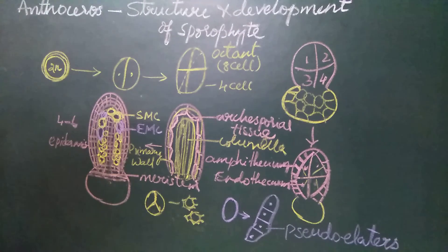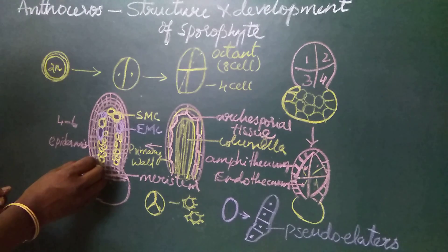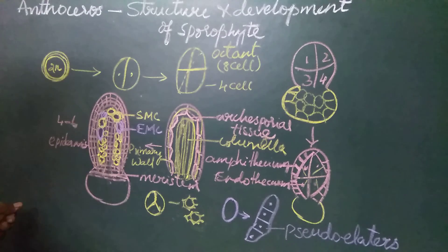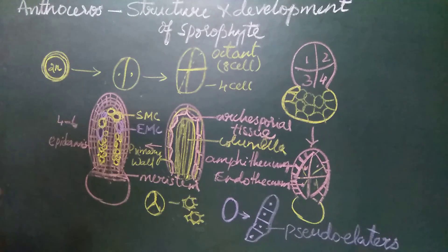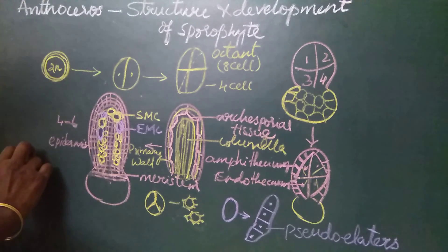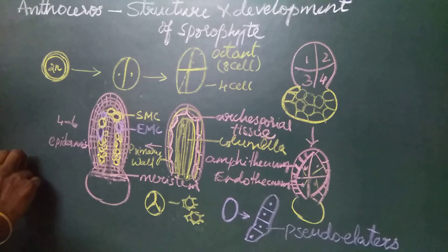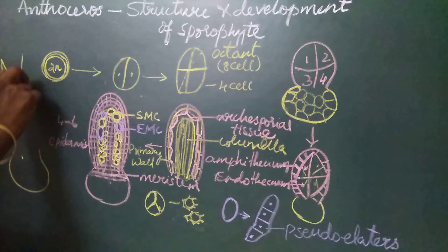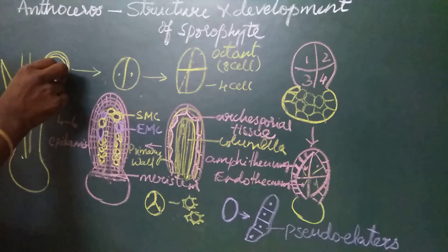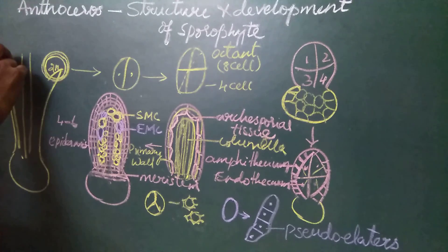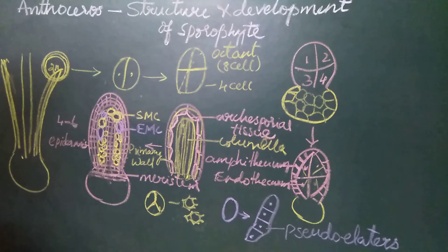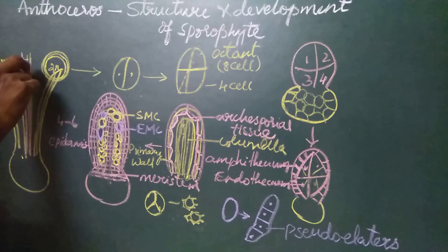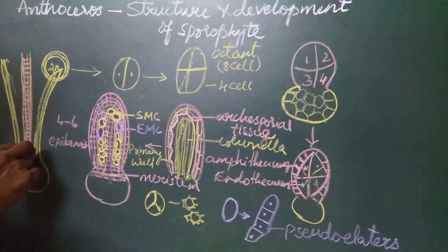When the capsule matures, in the initial stages of its development it is green in color; it changes color to dark yellow to black. At maturity, the capsule splits by longitudinal grooves. In some species it splits into two valves, and in some species into four valves. There is a central columella, and the capsule splits open revealing the wall layers, which are four to six in number on either side. The central region is the columella, made up of 16 vertical rows of cells.